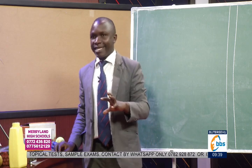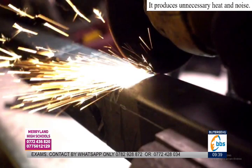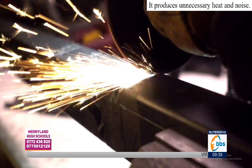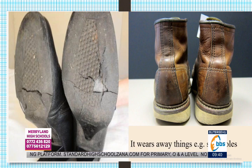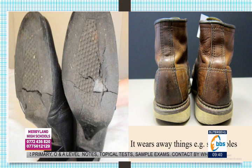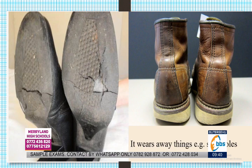Let's move to the illustrations. When machines are moving, it leads to production of heat and noise. If a train is moving and the driver applies the brake, it will produce a flash of light. Friction also wears away things like shoe soles, even leading to tear, as seen in the illustration.